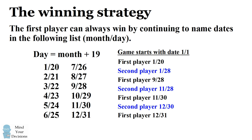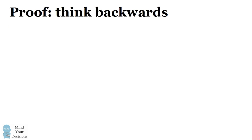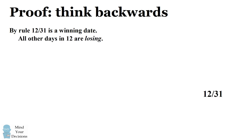So this is a strategy for how the game can be won, but the question is: how were we able to derive this? You want to think backwards. By rule, December 31 is a winning date. Logically, this means if you name any other day in December, that's a losing date — because it gives your opponent the chance to name December 31. So you don't want to be calling out a losing date.